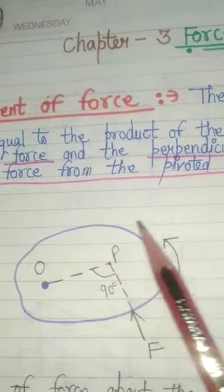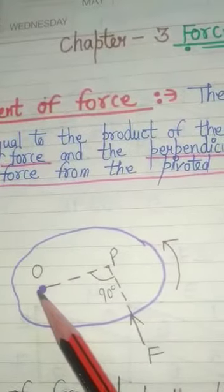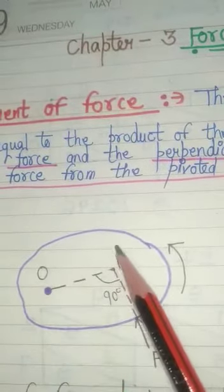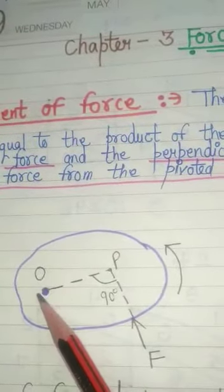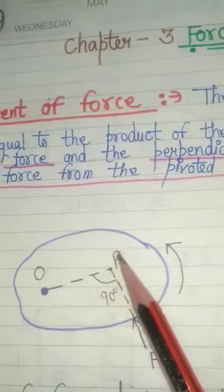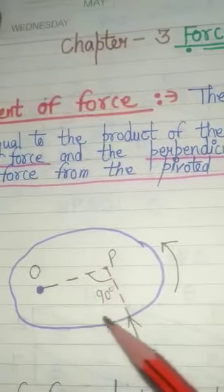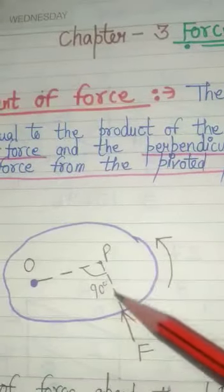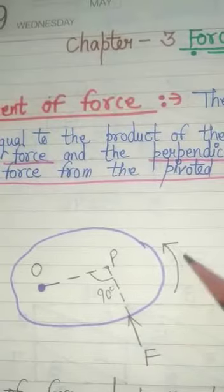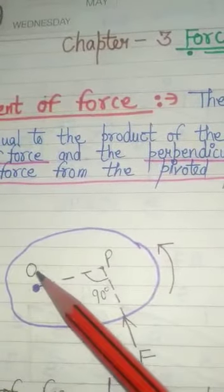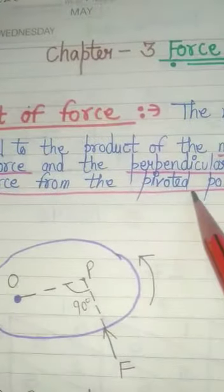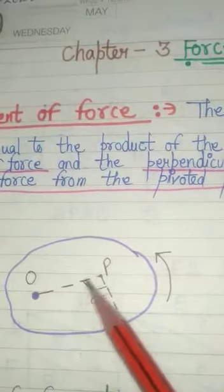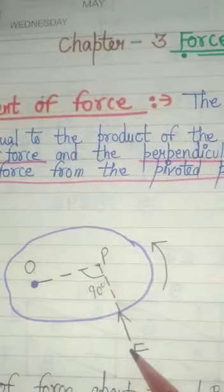Consider this object. This object is pivoted at this point — pivoted means it is fixed at this point. It is not free to move but it will move around only at this point. To rotate this object, we will apply a force F from here in the direction FP. This force will rotate the object around the fixed point O. In this case, OP is the perpendicular distance and F is the force.